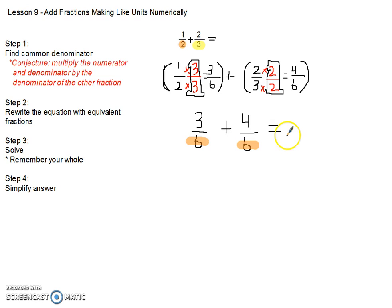So solve, we want to remember our whole. If this fraction is out of 6, and this fraction is also out of 6, or 6 parts, our answer also needs to be 6 parts, because our whole remains the same. Then we add our top numbers together, or how many parts we have, so we have 3 parts here, plus 4 parts here, is equal to 7 parts.